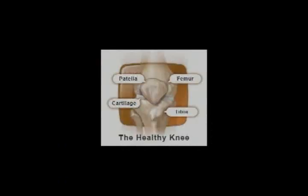Now we're going to discuss the anatomy of the knee. The knee is made up of three bones: the femur bone, the tibia bone, and the patella.